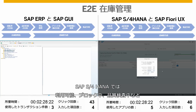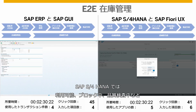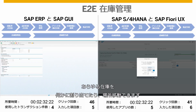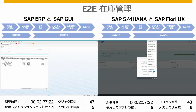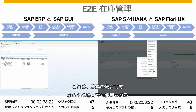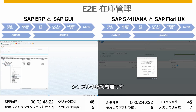With SAP S4HANA, all stock from unrestricted, blocked, or quality management can be reassigned and moved to different storage locations or plants as needed. This means a simple reposting process, regardless if it is scrapping or transferring.